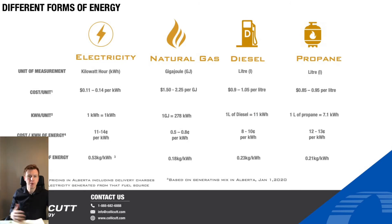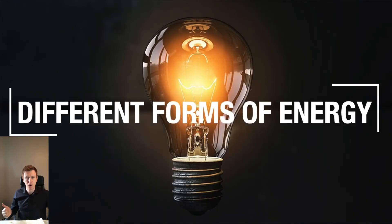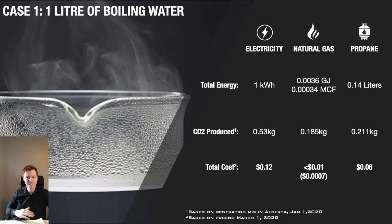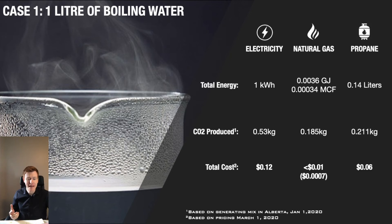Now that we've looked at those four different scenarios, let's put some practical applications out there to see how these different energy sources compare in cost and sustainability. Our first example, which we're all familiar with, is boiling a liter of water — and we're not just talking about heating it up, we're talking about actually evaporating that entire jar of water you're seeing on the screen. To do that requires one kilowatt hour of energy. For electricity here in Alberta, you'd produce 0.53 kilograms of CO2 and it would cost you about 12 cents. Now with natural gas, you'd produce just under 0.2 kilograms of CO2 and it would only cost you 0.7 cents to do the same thing that cost 12 cents.